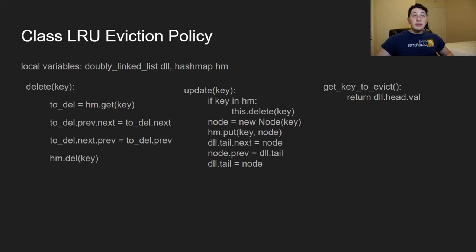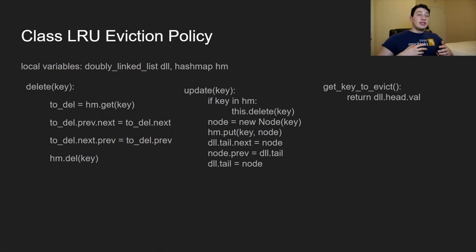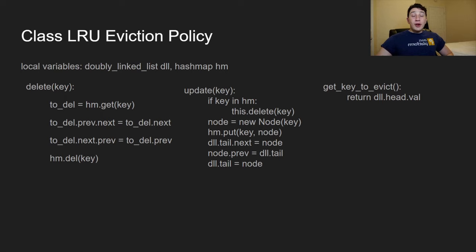For the LRU eviction policy class, local variables include a doubly linked list and a HashMap. To delete a key: find it in the HashMap, remove it from the doubly linked list using a delete method (setting the previous element's next to to-delete's next, and the next element's previous accordingly), then remove it from the HashMap. For update: if the node exists, delete it from both structures, add it back to the HashMap, and place it at the tail of the doubly linked list.